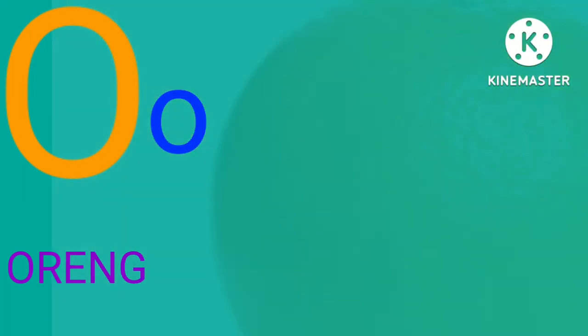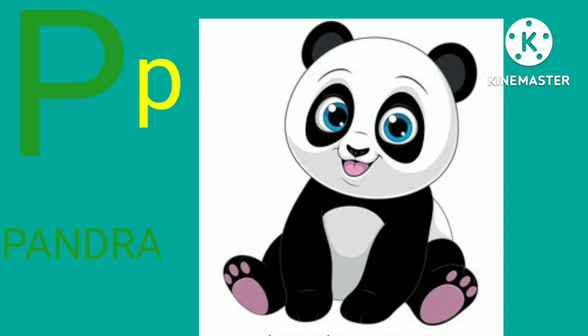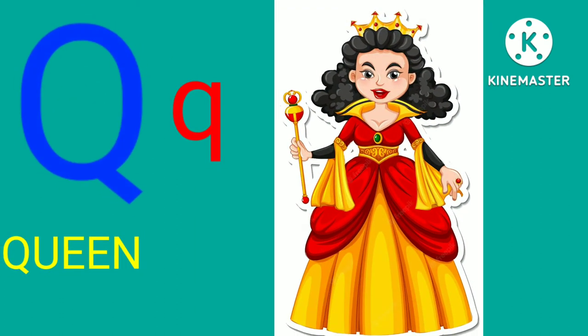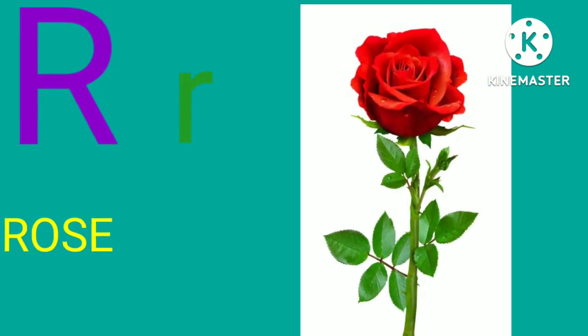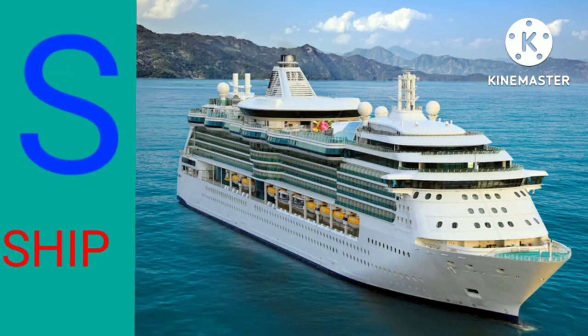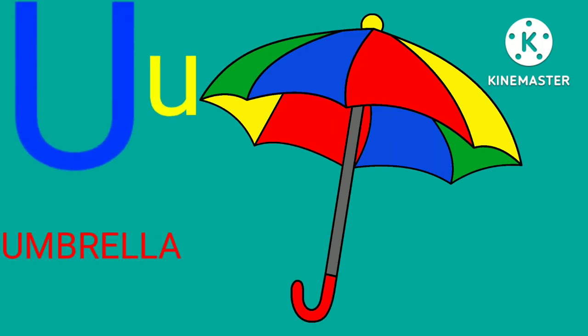P for panda, Q for queen, R for rose, S for sheep, T for tiger, U for umbrella.